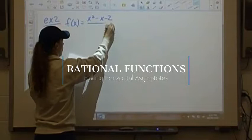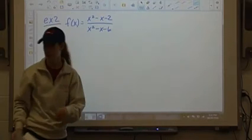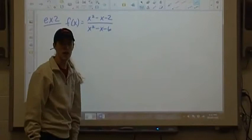F of x is equal to x squared minus x minus 2 over x squared minus x minus 6. Now I find it simpler to find our vertical asymptote, our horizontal asymptote, and our solutions if we go ahead and factor first.